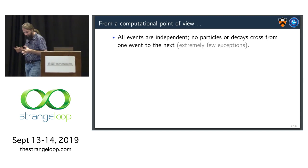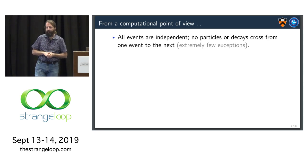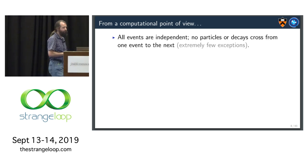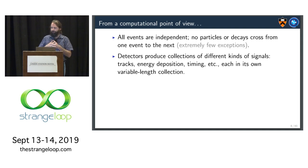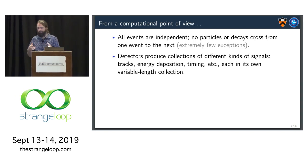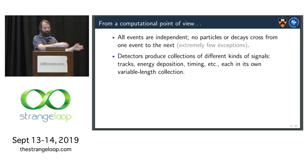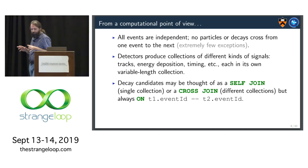For the Higgs discovery, six years ago. And then it shows up as a peak, a brand new peak. OK. So from a computational point of view, so that was the motivation, now let's think about the computation. One of the great advantages we have is that all the events are independent, so no particles from one decay will live long enough to be in the next decay, or at least it won't stay in the detector long enough. It will fly away. The detectors produce collections of different kinds of signals. Tracks, like we've seen, but also energy depositions, timing, and then when we partially analyze these, we put them in different buckets. These are the electrons, these are the muons, these are something else.